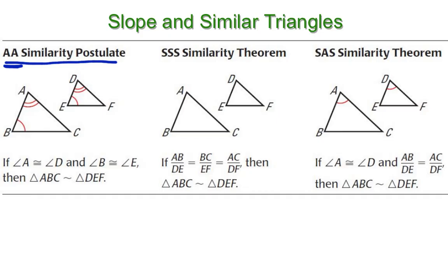For example, angle A and D here are congruent, and angle B and E are congruent, so the triangles are similar to each other.